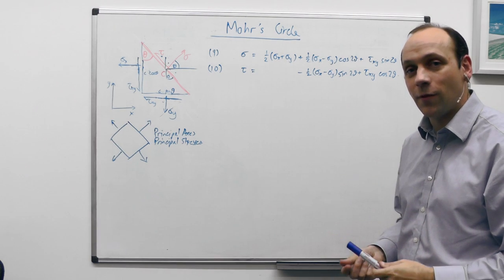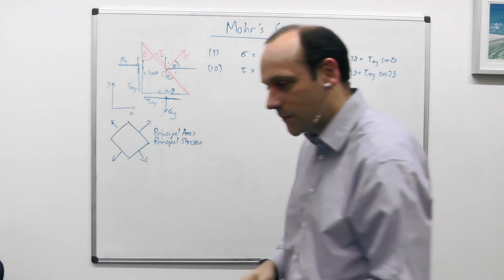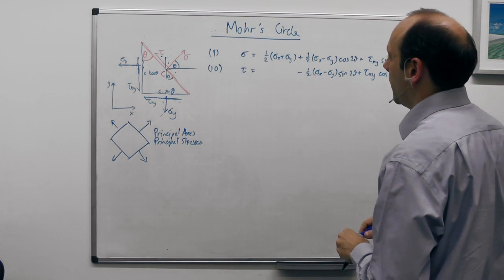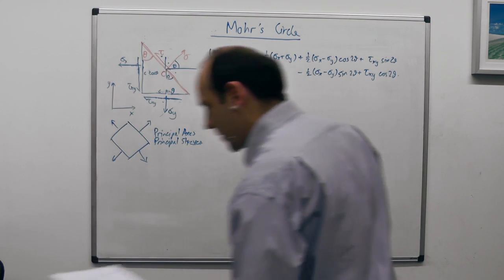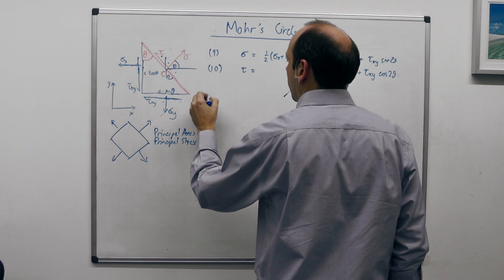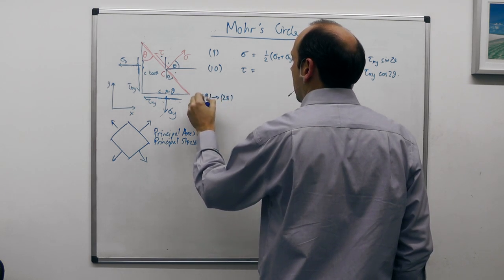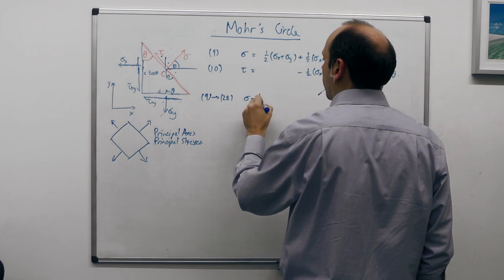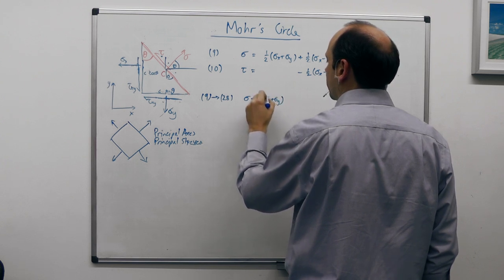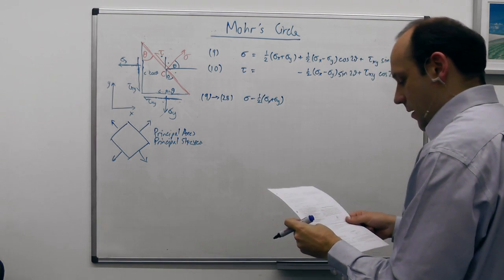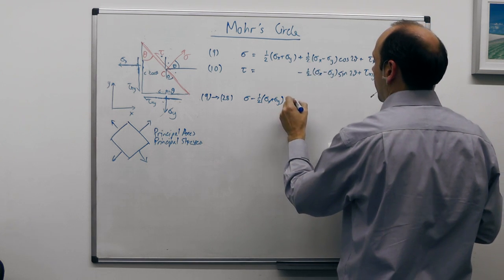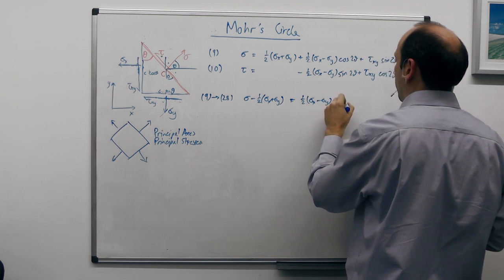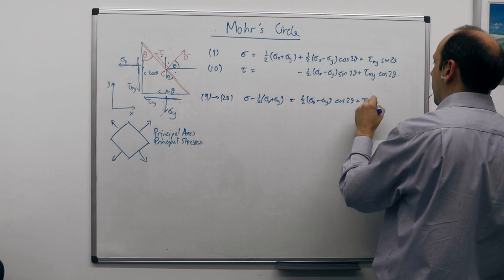Mohr's Circle is an interesting way of finding those without having to do a lot of algebra. We take equations 9 and 10 from before and rearrange them. Equation 9 becomes equation 28: we take the sigma term to the other side, so we have sigma minus a half (sigma_x + sigma_y), and that equals a half (sigma_x - sigma_y) cos 2θ plus τ_xy sin 2θ.